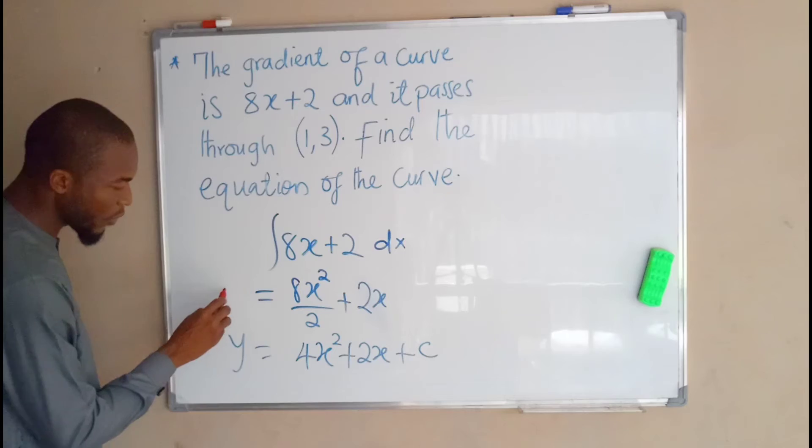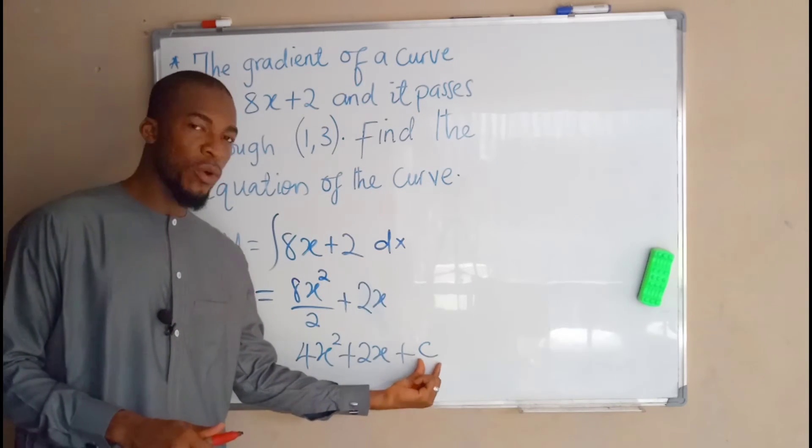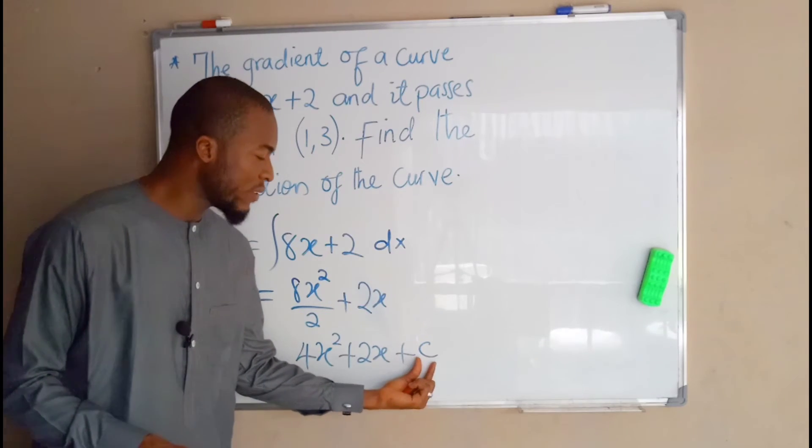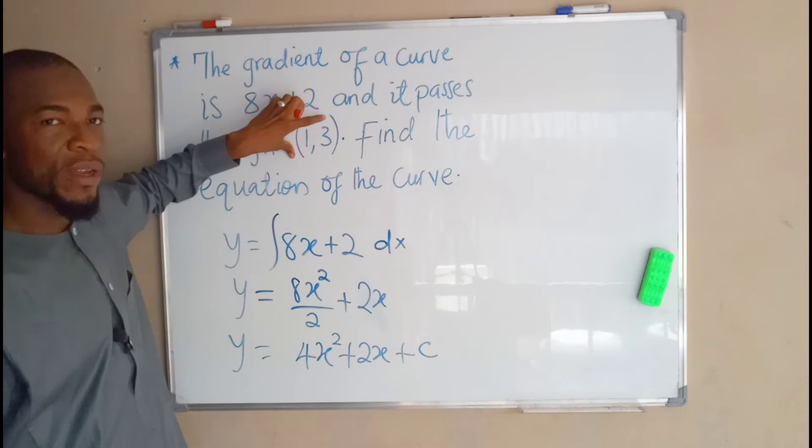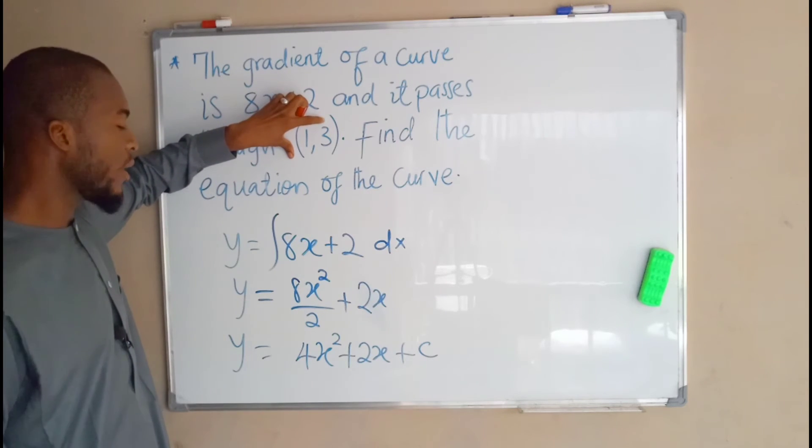And you know that this is equal to y, so this is the equation of the curve. But we have a constant c which we don't know. So to find the value of this c, we are going to plug the point we have: (1, 3). 1 is the value of x while 3 is the value of y.